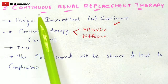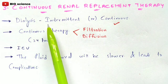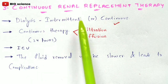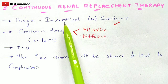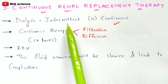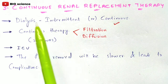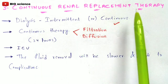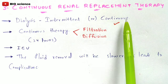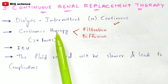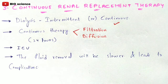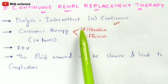Coming to the third type — Continuous Renal Replacement Therapy (CRRT). As the name indicates, this is a continuous process, unlike intermittent hemodialysis. This therapy can be performed either by filtration or by diffusion.